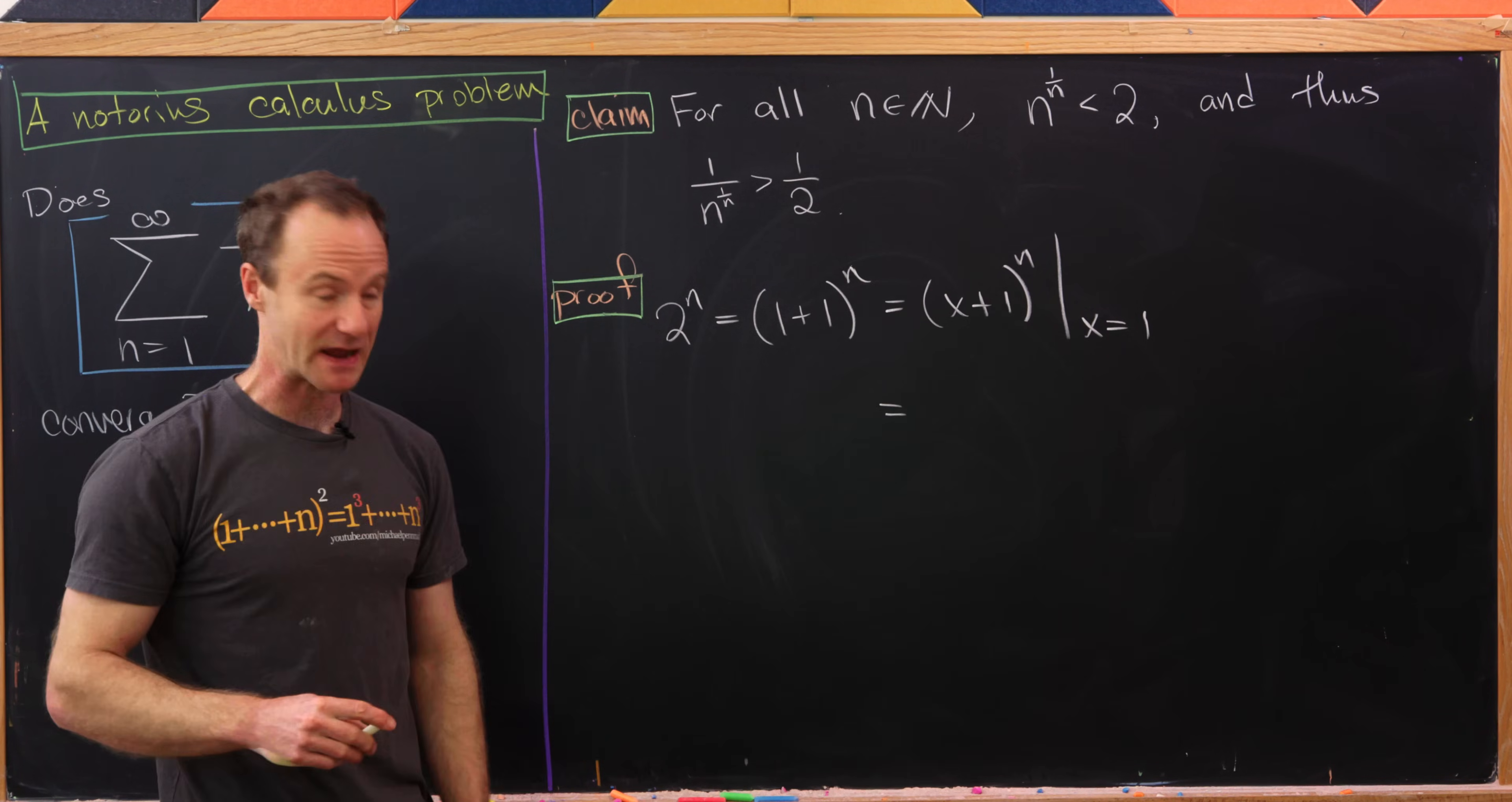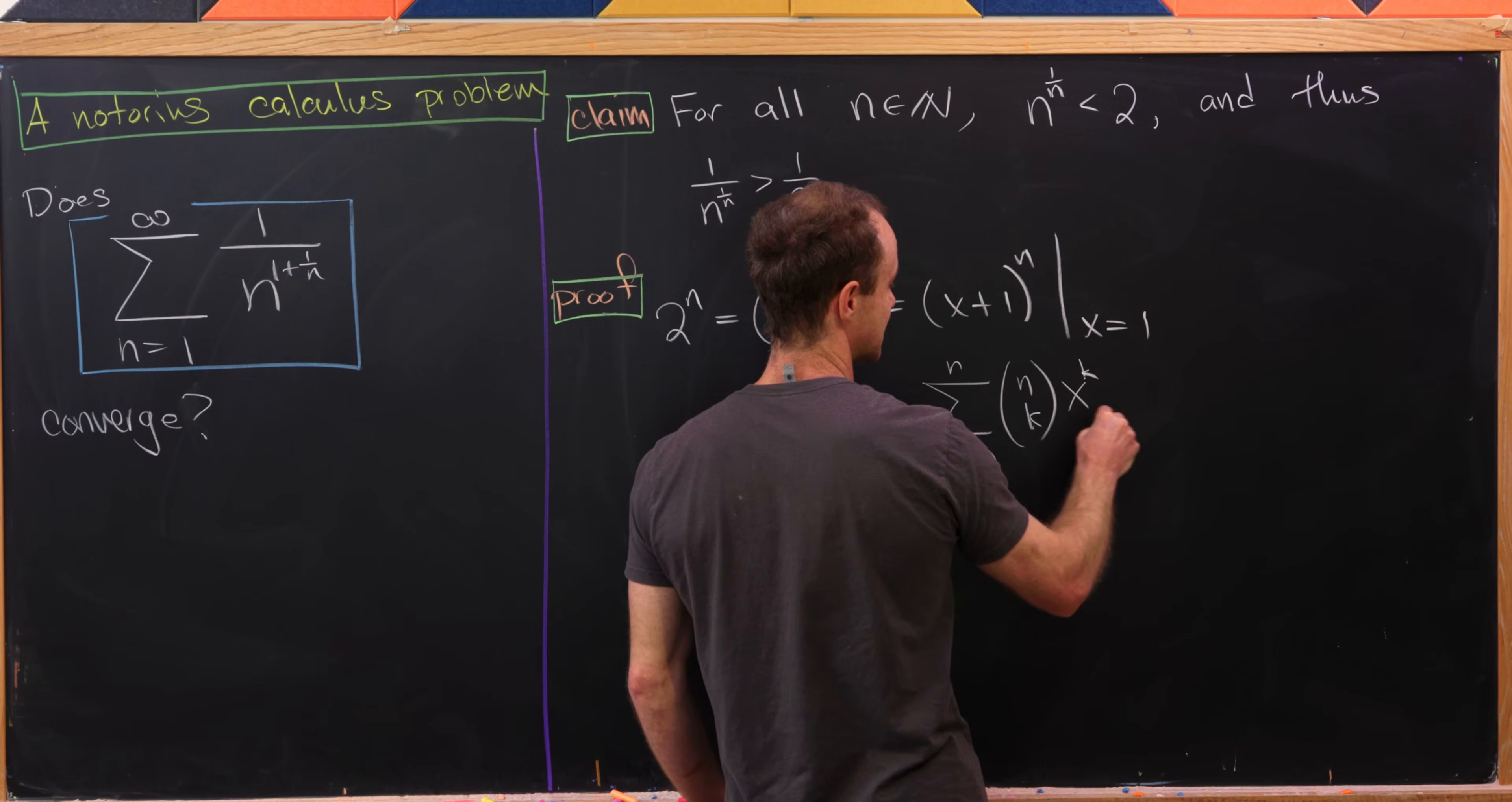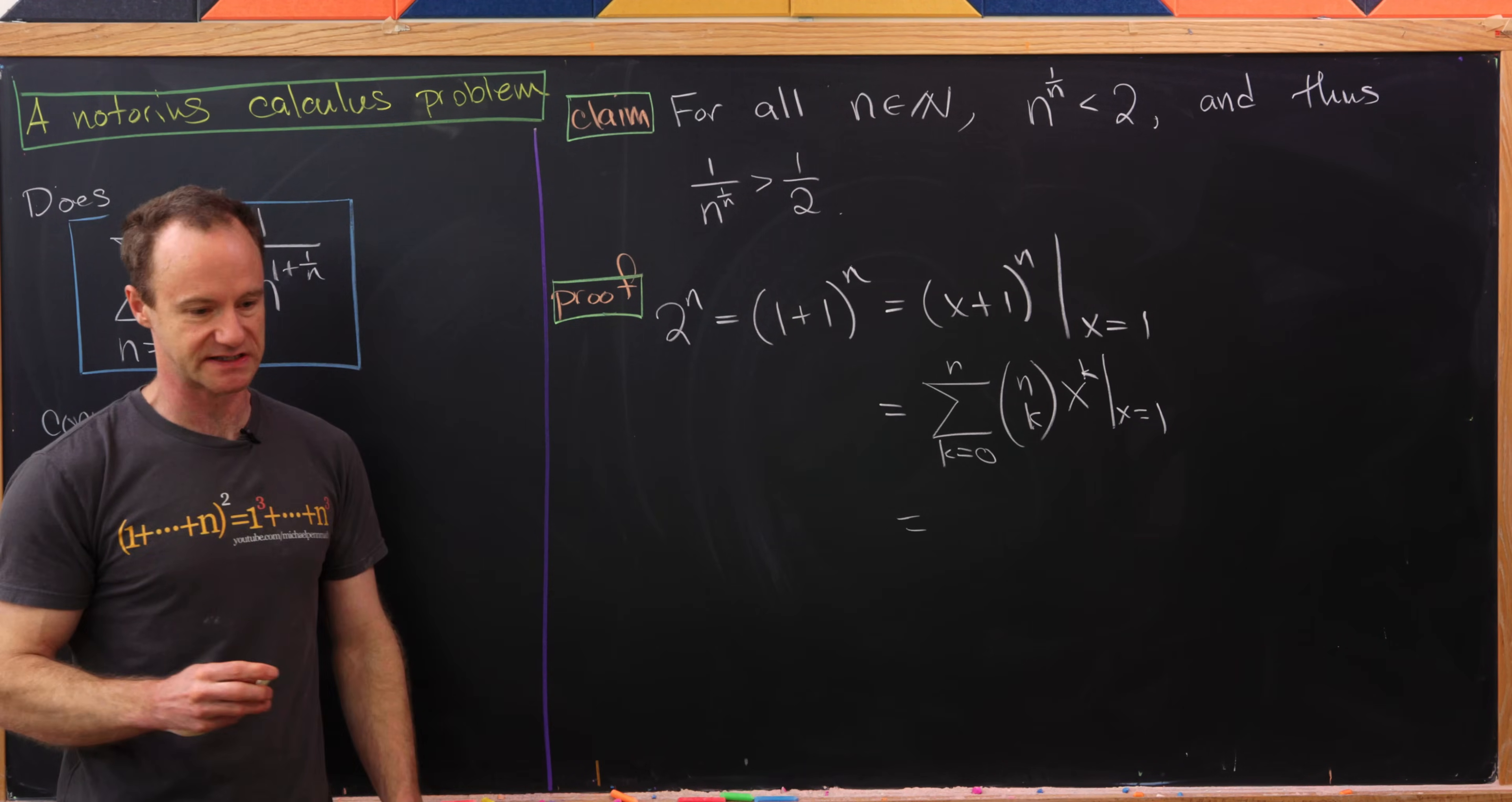But now by binomial expansion formula we know that this is the sum as k equals 0 up to n of the binomial coefficient (n choose k) times x^k. Evaluate it at x equals 1. Now let's write out the first couple of terms of this and while I do that I will plug in x equals 1.